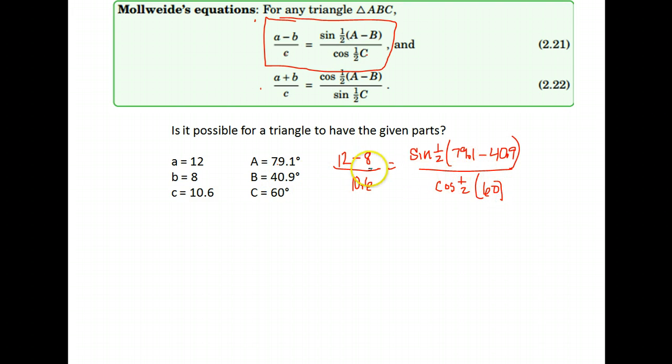The cosine of one half of angle C. Make sure your calculator is in degree mode. Let's calculate each side. On the left hand side I take 12 minus 8 over 10.6, so that's 4 divided by 10.6. On the right hand side I do 79 minus 40.7 is 38.2, then multiply by a half or divide it by 2, and that gives me the angle 19.1. So on top, the sine of 19.1. On the bottom, one half times 60 is 30, so the cosine of 30.